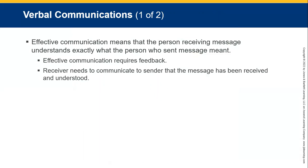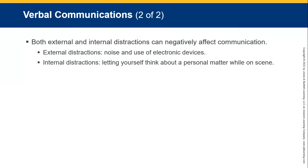Effective communication means the person receiving the message understands what the person who sent it intended. Effective communication requires feedback — it's sometimes best to repeat back what you've received so the sender knows the message was received and understood, with no broken telephone effects. Both external and internal distractions can negatively affect your communication. External distractions include noise, beeping sounds, and sirens. Internal distractions: don't let yourself think about personal matters while on scene — you need to be clear of mind and not let noise in your brain affect your communication with your patient.